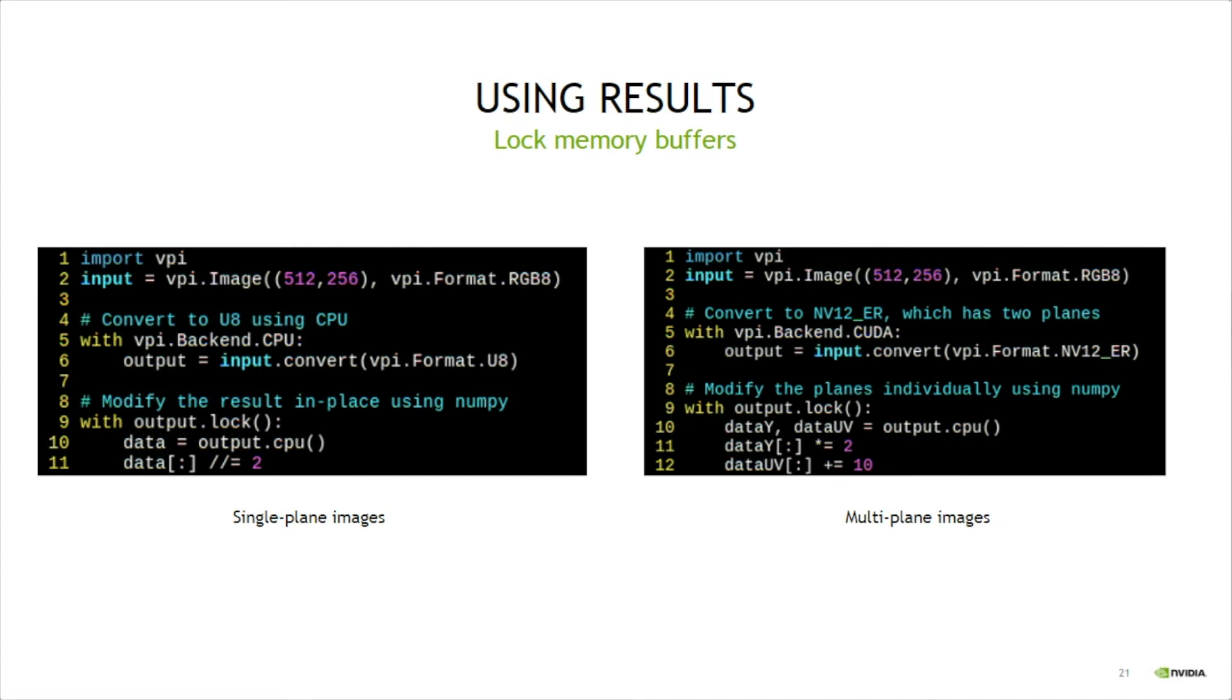The CPU method can also be called outside a lock scope. In this case, the memory object is implicitly locked and then unlocked, with its contents copied to the output NumPy array. This array is not a view to the memory object. Writes to the return NumPy array will not be reflected back to the memory object. For efficiency reasons, it is advisable to always lock the array explicitly in order to access its contents.